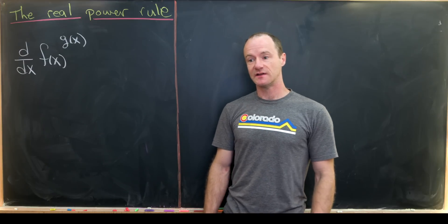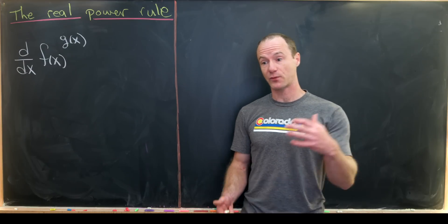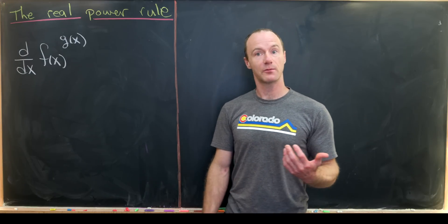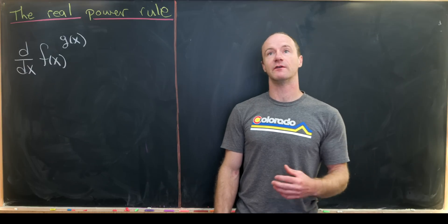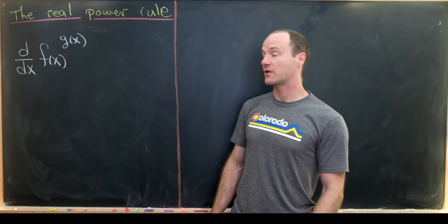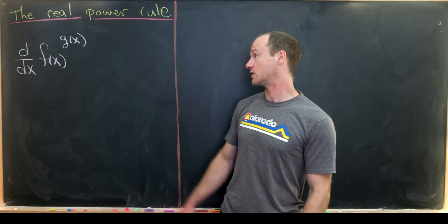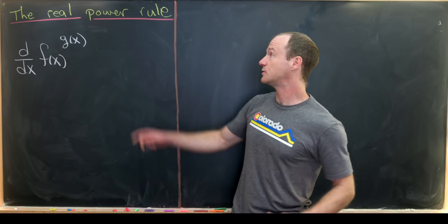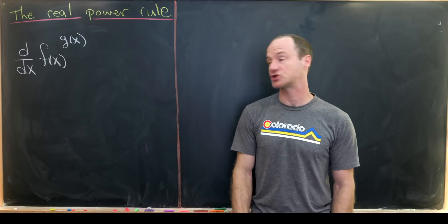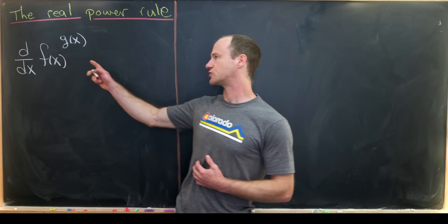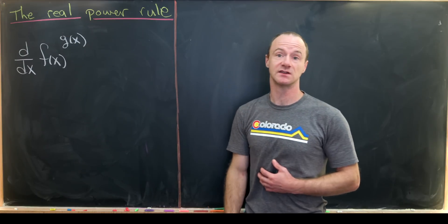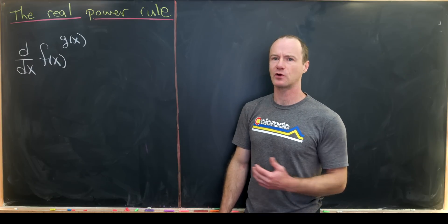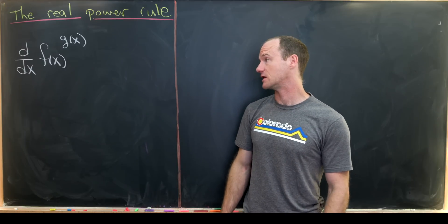This is based on the fact that when we take the derivative of the product of two functions, f(x) and g(x), we call that the product rule. And when we take the derivative of a quotient of functions, we call that the quotient rule. Although the power rule is generally not given for when we have a function in the base and a function in the exponent — this is a lot more interesting. So maybe this could be called the real power rule, where we have a function in the base and a function in the exponent. Let's derive a nice formula for this derivative and see how it relates to some commonly known functions.